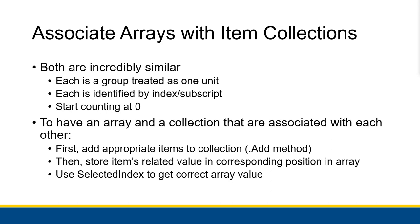You can have a list box with a whole bunch of stuff that the user can choose, and then have that list box connected with information in an array, where one of those items in the array gets shown to the user or used in a calculation based on the selection they make. In order to get an array and an item collection that are associated, you would first — in the load method — add appropriate items to a collection using the .add method, then store the related value into the corresponding position in an array. Then you can use the selected index property to get the correct array value.